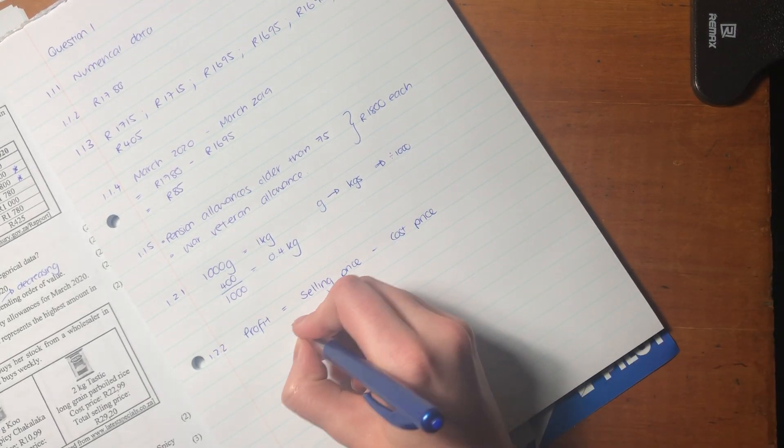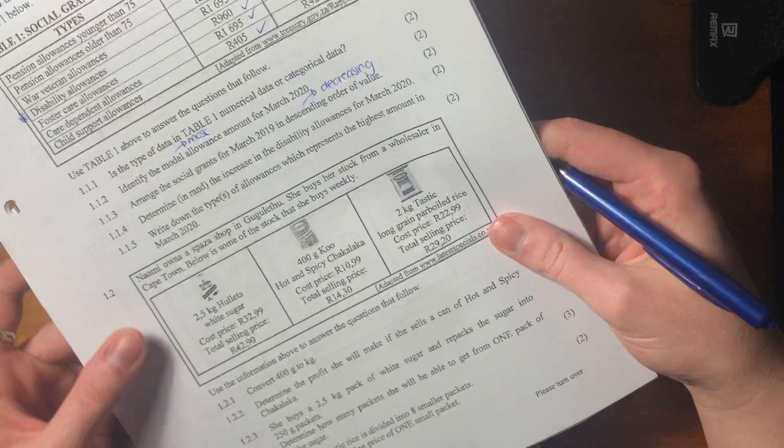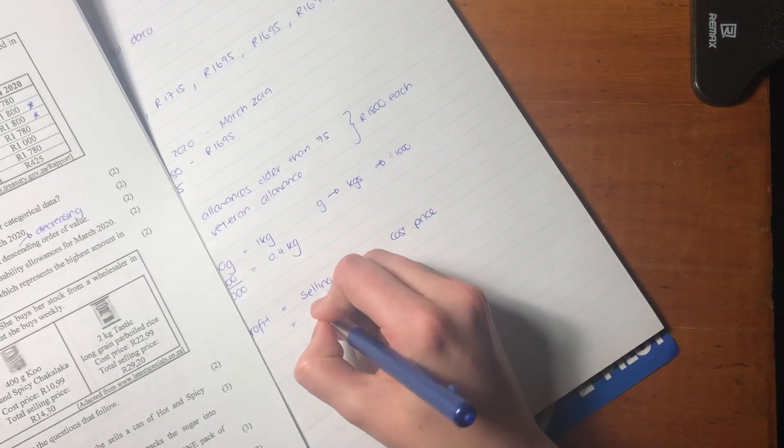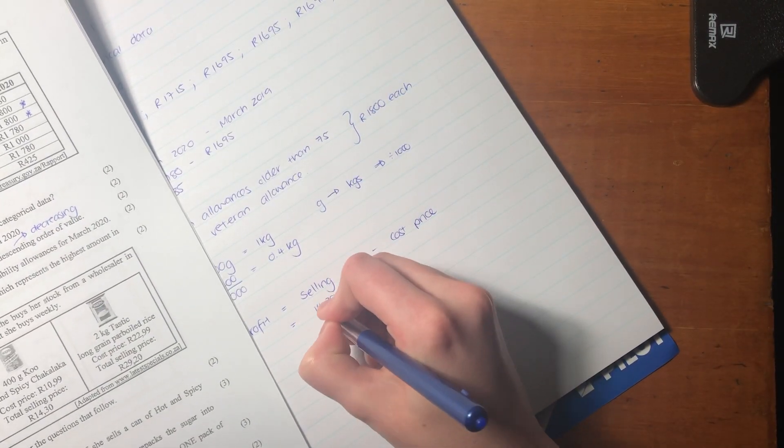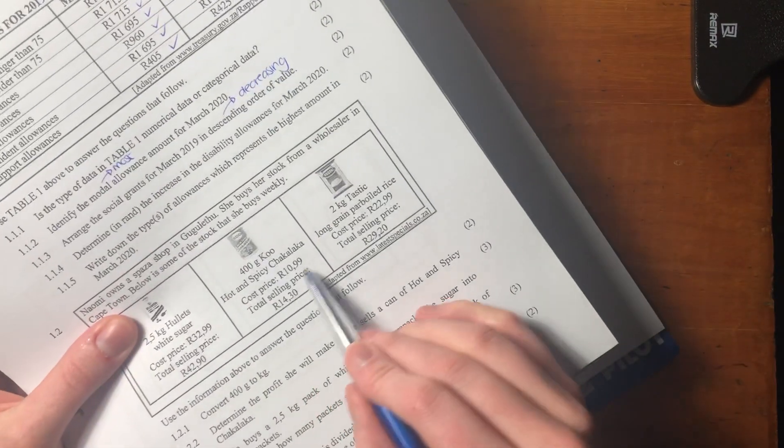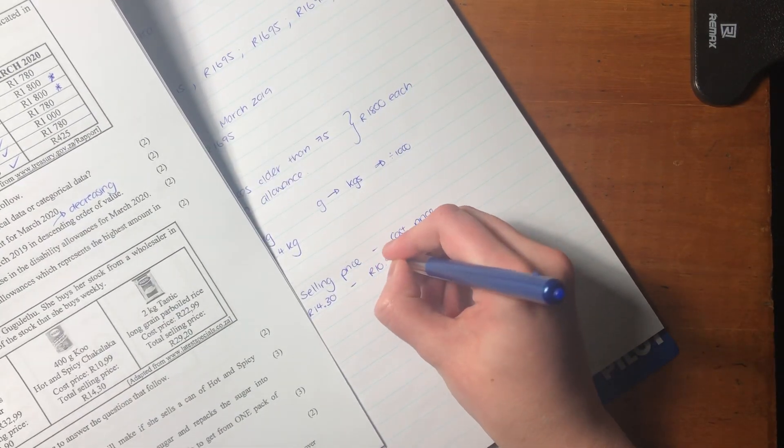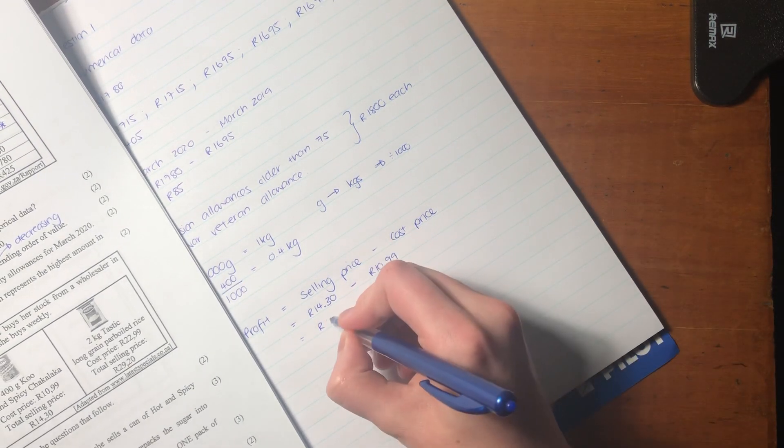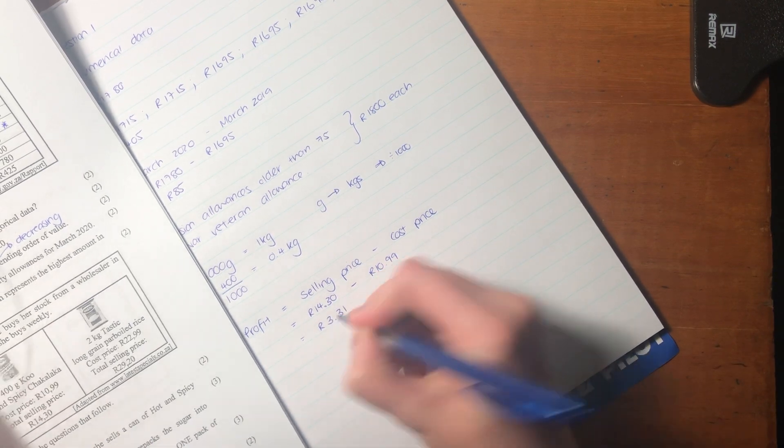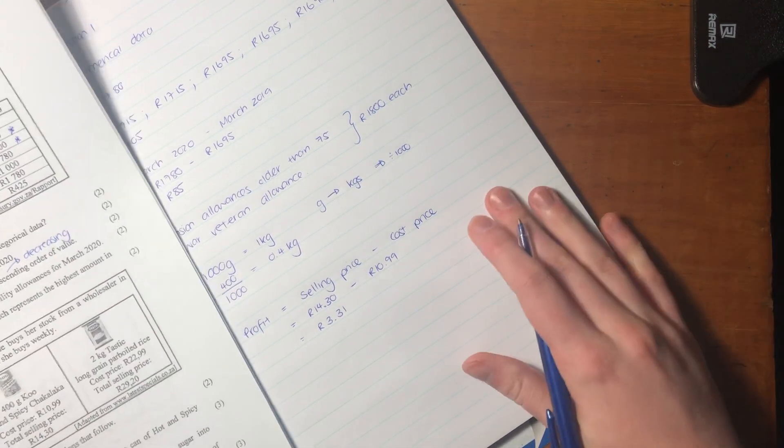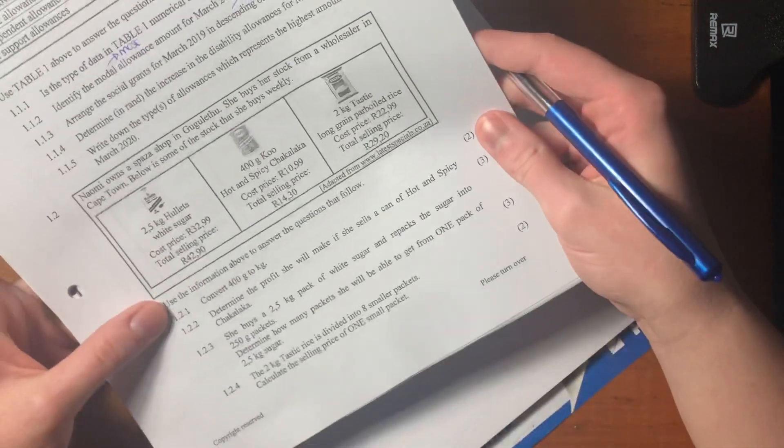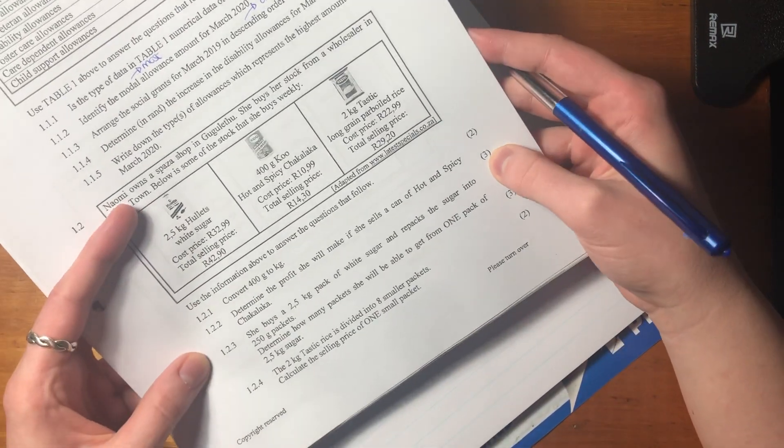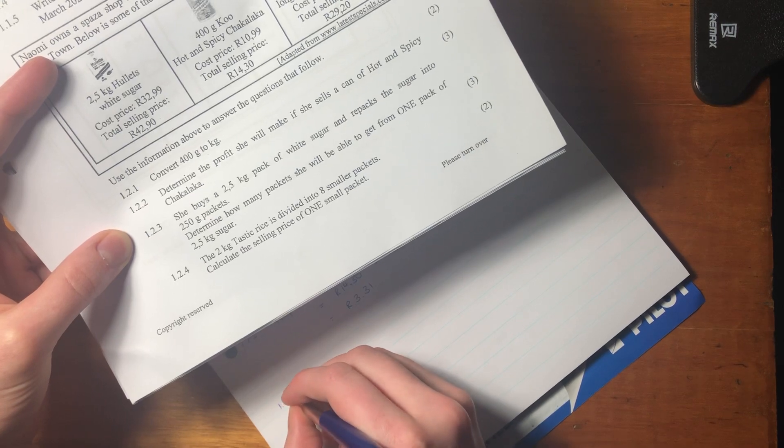In this case, for the hot and spicy chakalaka, it is 14 rand and 30 cents selling price. Our cost price is 10 rand 99. Our profit is basically the difference between the two, which is 3 rand and 31 cents. If you don't believe me, check on your calculator. We've got three marks in the bag.